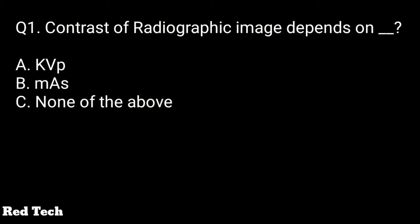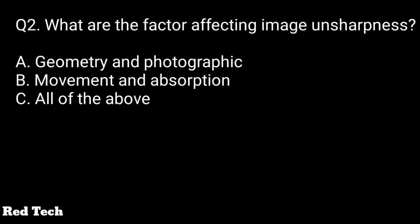Question number one: contrast of a radiographic image depends on which option? The options are kVp, mAs, or none of the above. The right answer is kVp. Contrast basically depends on kVp.